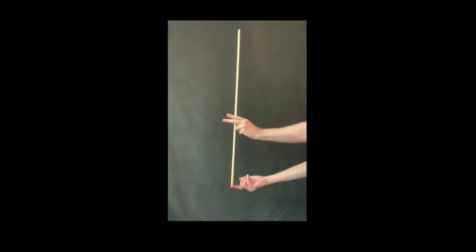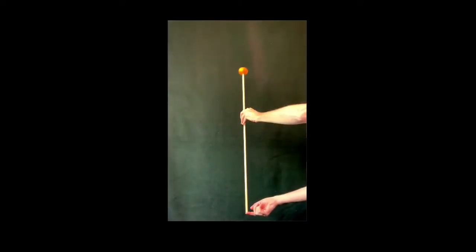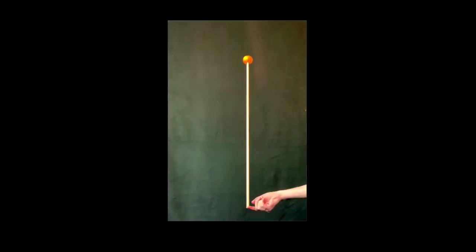Balancing a stick on your finger might be a challenge, but put something heavy on the top, such as an orange, and it's much easier. Why is that?